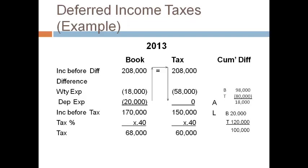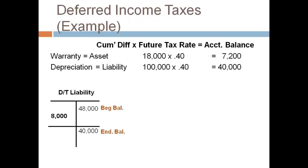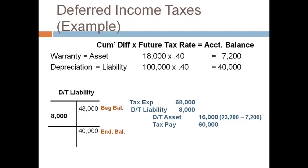Depreciation is still a liability and warranty expense is still an asset. The cumulative difference is multiplied by the future tax rate to get the balance in the deferred tax account. For the deferred tax liability, the difference in the prior year balance and the current year balance is the amount recorded in the journal entry. There was room for only one T-account on this screen, so the amount recorded for deferred tax asset is the 2012 balance of $23,200 less the 2013 balance of $7,200. The tax payable is the amount at the bottom of the tax column. Tax expense is the amount at the bottom of the book column because the future tax rate did not change. It is important to remember that you do not record the computed account balance to the deferred tax account — you record the difference in the prior year balance and the current year balance.